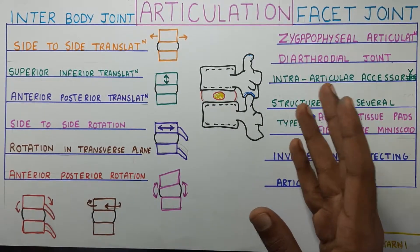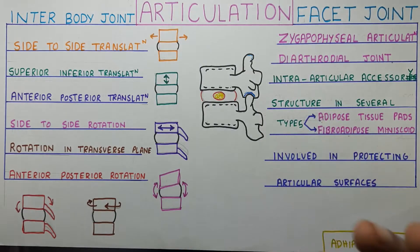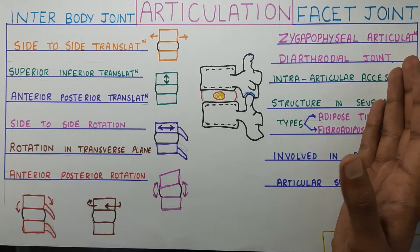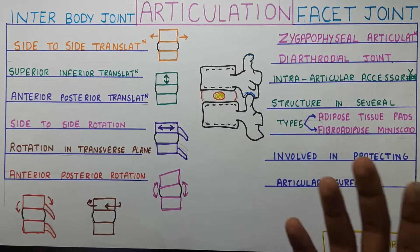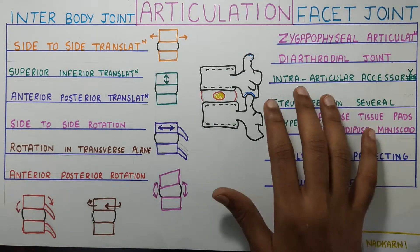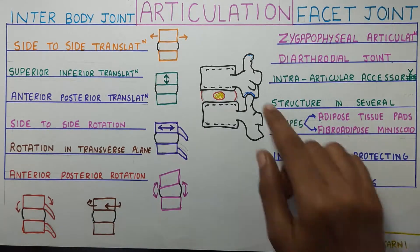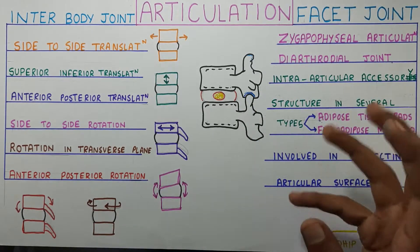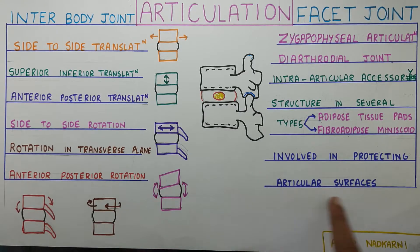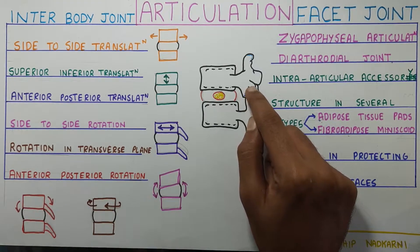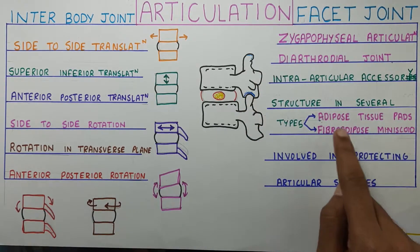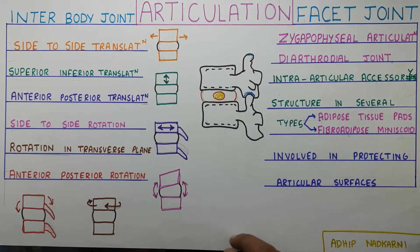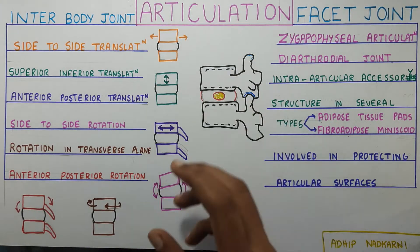The facet joint is also called the zygo-apophysial joint, or apophysial articulation, or also diarthrodial joint. There are intra-articular accessory structures along with the facet joint articulation. These accessory structures are involved in protecting the articular surfaces, and these are your adipose tissue pads and also fibro-adipose meniscoid. So let's look at the facet joint.